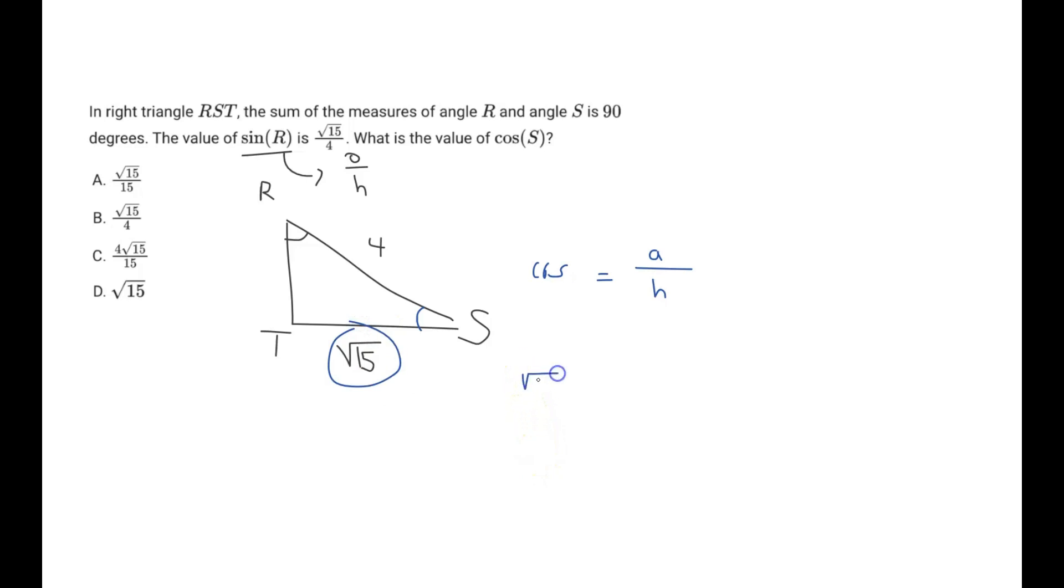So in our answer, square root 15 should be on top. But what is the hypotenuse? Well, we don't even need to do any calculations because we know the hypotenuse, we already calculated, which is 4. So square root 15 over 4. Our answer is B. So a very straightforward question.